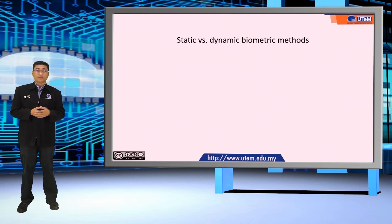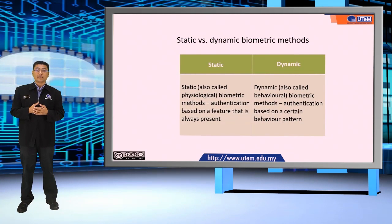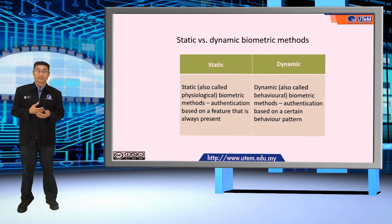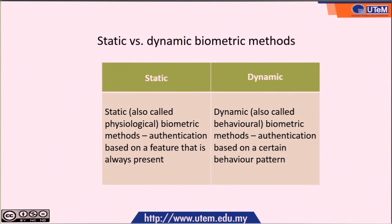Static versus dynamic biometric methods. Static methods, also called physiological biometric methods, authenticate based on a feature that is always present. Dynamic methods, also called behavioral biometric methods, authenticate based on a certain behavior pattern.